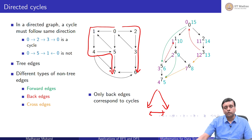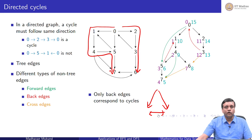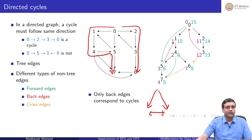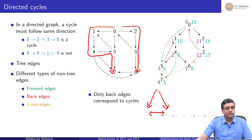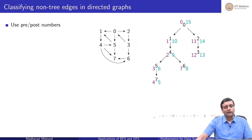In the undirected case, every non-tree edge indicated a cycle. In the directed case, it is more subtle — it is not enough to find a non-tree edge; you must find a non-tree back edge. So the problem is classifying non-tree edges into forward, back, and cross edges.